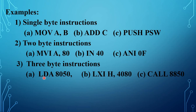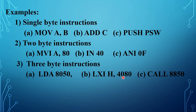Three-byte instruction examples: LDA 8050 — first byte is LDA opcode, second byte is low-order address 50, third byte is high-order address 80. LXI H, 4080 — first byte is LXI opcode, second byte is 80, third byte is 40; here 4080 is 16-bit data. CALL 8850 — first byte is CALL opcode, second byte is low-order address 50, third byte is high-order address 80H. These are the examples of single, two, and three-byte instructions.